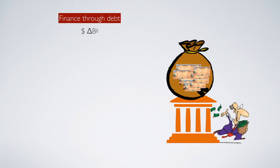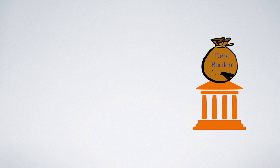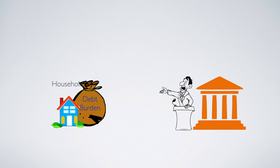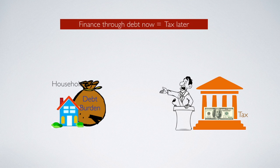However, debt burden cannot grow non-stop. Once in a while, politicians will show up and give a public speech saying there is a need to increase tax so that we can pay back our debt. When this day comes, government actually dumps the debt burden back to the household and takes away the equivalent amount of money from the household through taxation in order to pay back all the debt balance. Therefore, any kind of finance through debt actually means that government is still taxing you — it's just that government will tax you later, but not today. So the difference between tax and finance through public debt is that financing through public debt is actually just postponing the taxation time.